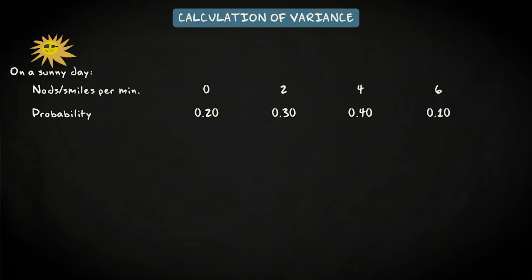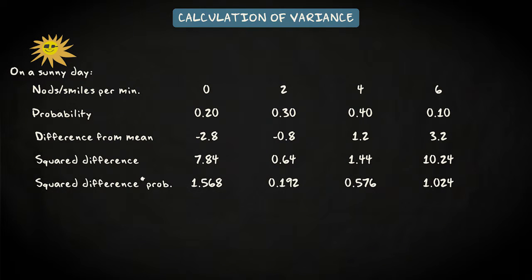This table shows the steps. We take the difference between the mean and each number of smiles and nods, we square the difference, multiply it with the probability, and then sum it. Indeed, 3.36.